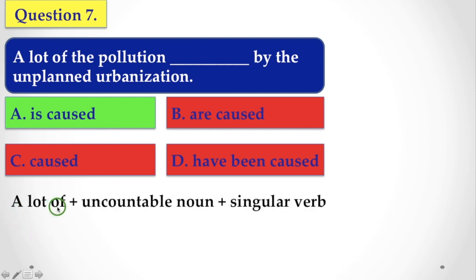Why? A lot of with uncountable noun is followed by a singular verb. Here, pollution is an uncountable noun. So you have to use a singular verb.